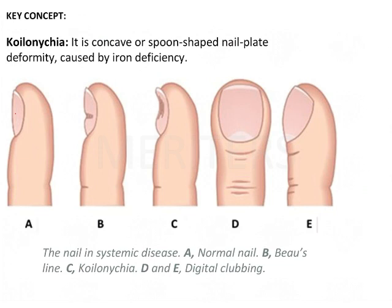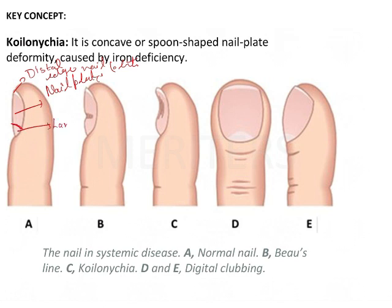Looking at the normal anatomy of the nail: this is the nail plate, and this is the distal edge of your nail plate. Then there will be a semicircular area here, and this particular area is known as the lunula. Here there will be a cuticle-like thing, known as the cuticle or eponychium. And then there will be a proximal nail fold.